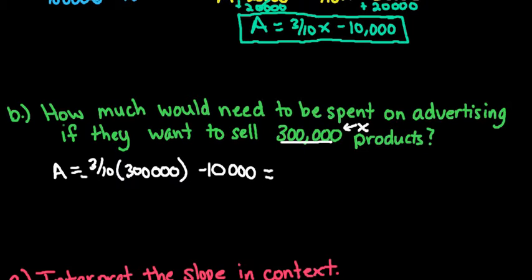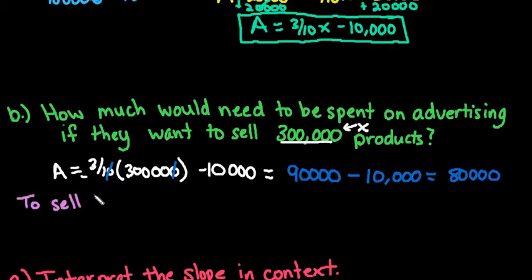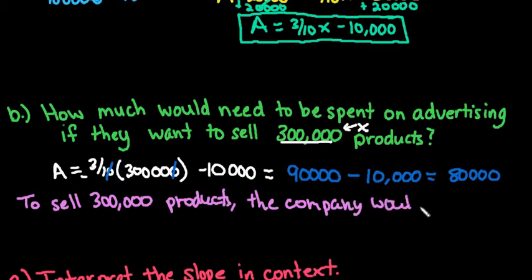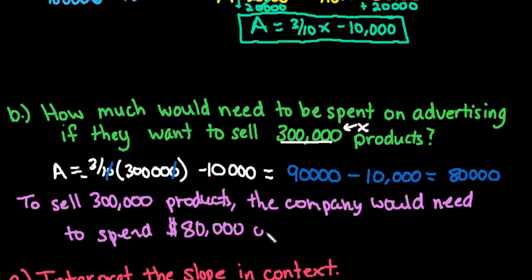So we would take and replace x in our problem with 300,000 minus 10,000 and we would simplify. So this part right here, if we simplify, a zero would cancel out. So if I do 3 times 30,000, that gives me 90,000 minus 10,000, which equals 80,000. So we could write that in context. To sell 300,000 products, the company would need to spend $80,000 on advertising. It's always important to write it in context and spell it out.